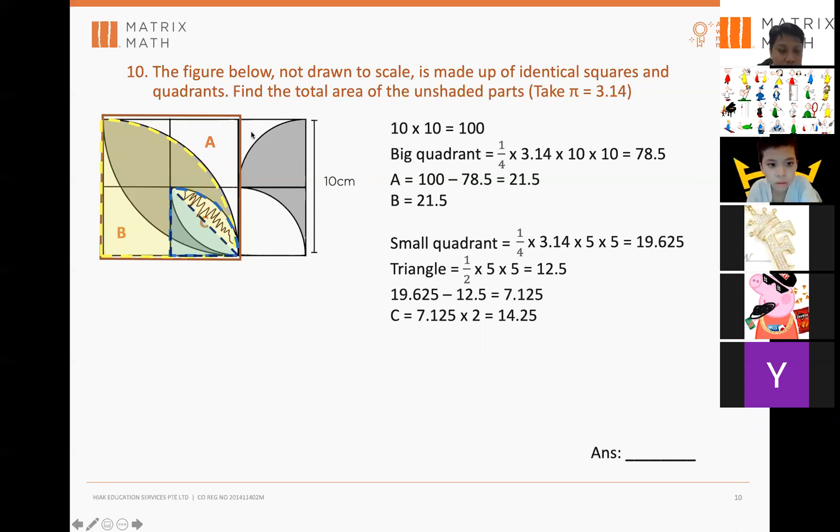Now, look here. Look at these two. So, there's two ways to solve this. The long way is to find the area of the boomerang plus the area of the quadrant and then add together. The shortcut will be this. You cut this and you put it here.